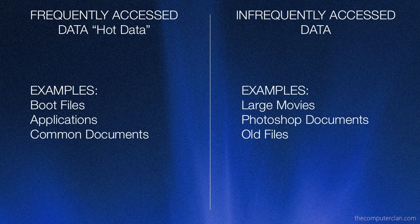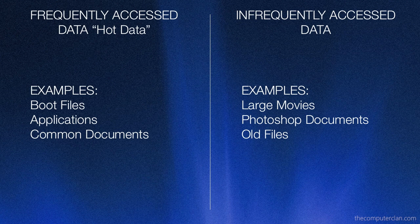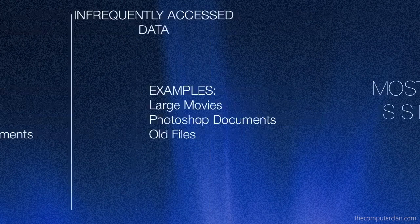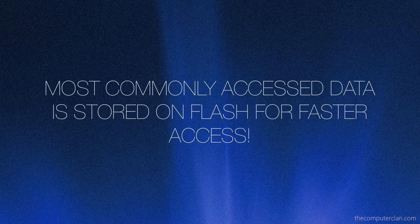Infrequently accessed data, such as large movies, maybe some Photoshop documents, old files that you do not open as often — those are stored on the hard disk. The hard disk can store more data, but it is slower. And these files, since they're not as frequently accessed as hot data, they have a lower priority, so they get stored on the hard disk and not the flash. To sum that up, most commonly accessed data is stored on the flash for faster access.